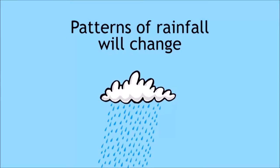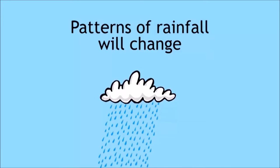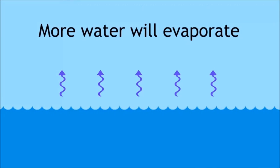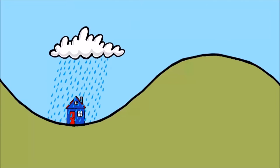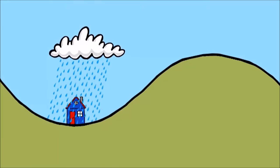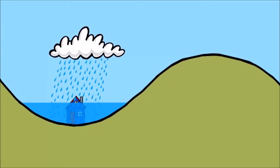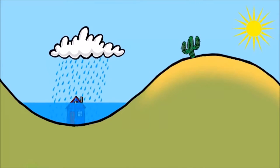Patterns of rainfall will also change. Although a hotter world would have more water evaporated from the seas, this water may not rain down as it does at present. Some places will undoubtedly have more rain causing flooding, whereas others may have less rain causing droughts.